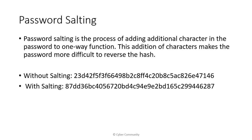Password salting is a technique where a random string of characters is added to a password before calculating its hash. Salting makes it more difficult to reverse the hash and defeat pre-computed hash attacks. For example, if the password is '123', adding random characters before and after it changes the hash entirely, making it very difficult for attackers to crack even if the hash is obtained.